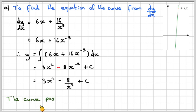The curve passes through the point (2, 5). We're given that it goes through that point there, so that will allow us to find c. When y is 5, x is 2. So we get 5 = 3(2²) - 8/(2²) + c.